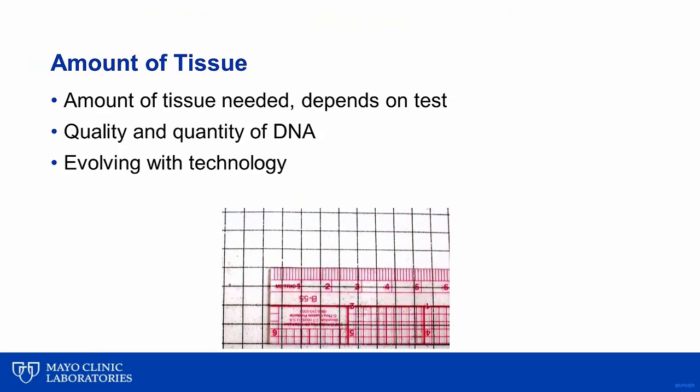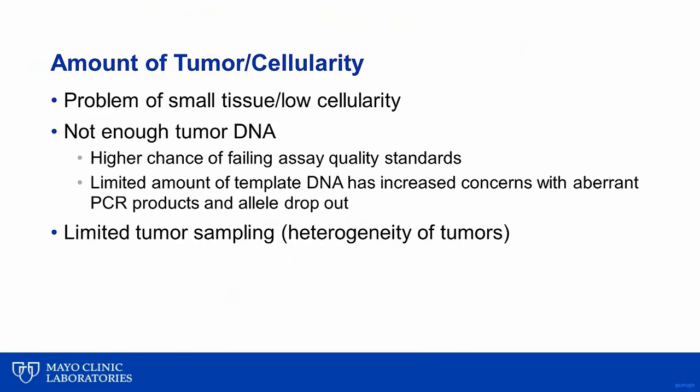The amount of DNA needed for different tests is evolving with technology, making this something of a moving target. If there is not enough tissue or DNA, the problems with a small amount of tumor and low cellularity include not getting enough DNA for the test, resulting in a higher chance of failing the test's quality metrics. A limited amount of template DNA can lead to sequencing artifacts and false positive or false negative results. On a biologic level, when you only have a small sample of cells, you have limited sampling of the tumor itself, and given tumor heterogeneity, you are less likely to see the spectrum of alterations truly present.